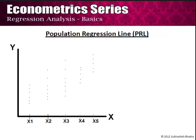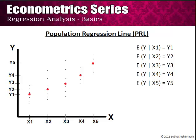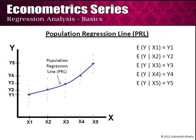What the population regression line would be is that we take the mean values of all these consumption expenditures — now represented by the red dots. At X1 we can see that the mean consumption expenditure is equal to Y1; for X2 the mean consumption expenditure is equal to Y2, and so on. The line connecting these dots is known as the population regression line. As you can see, it need not always be a straight line — it could be a curved line as shown in this case. This line which connects the mean value of Y for each value of X is known as the population regression line.